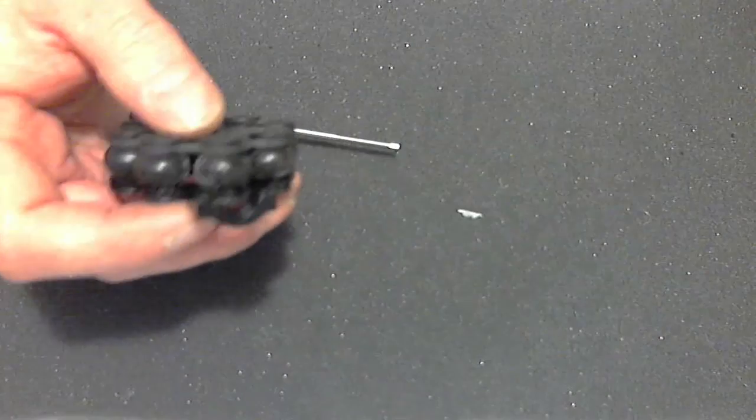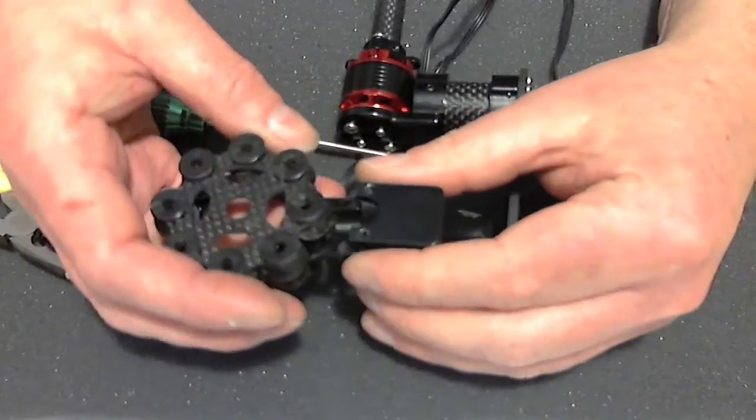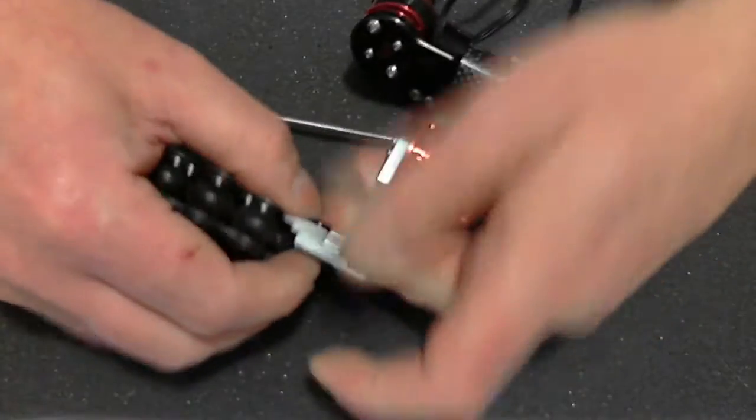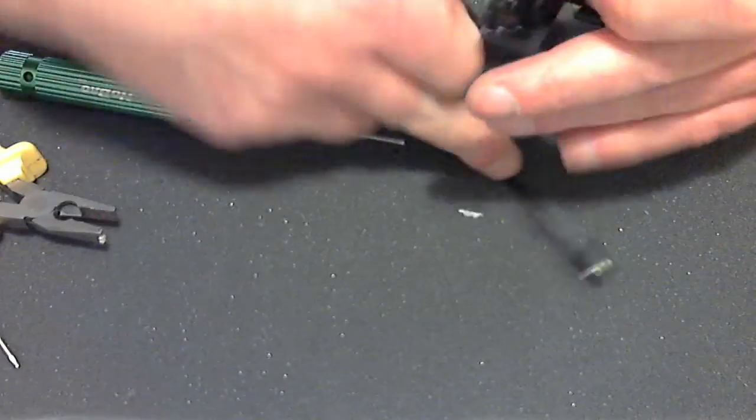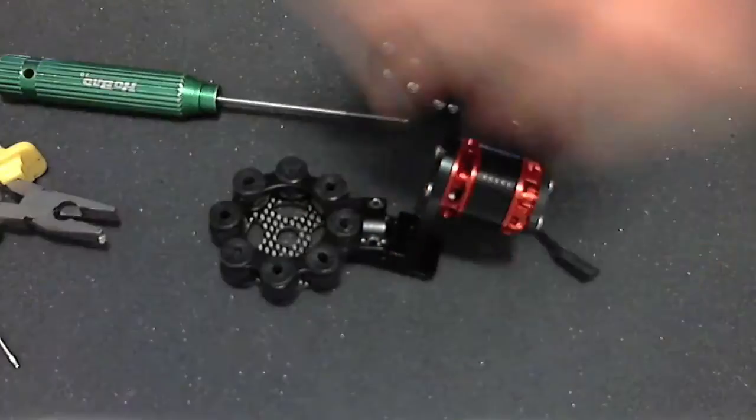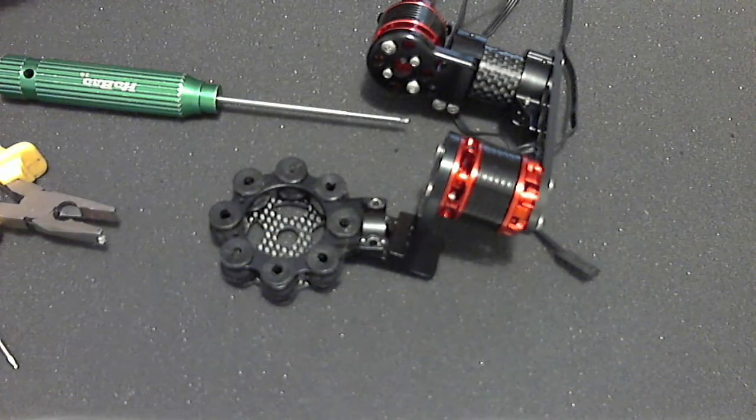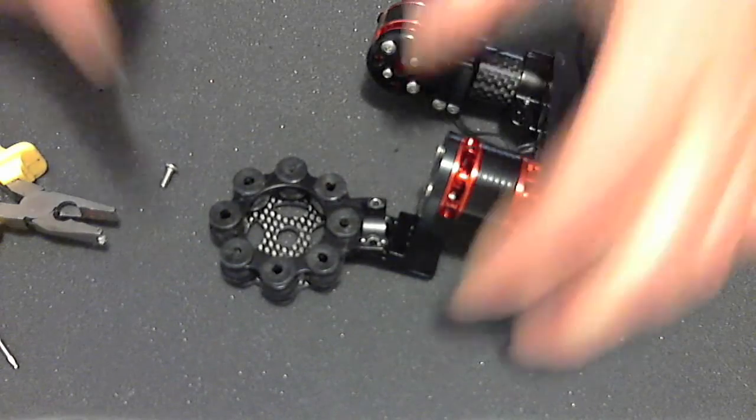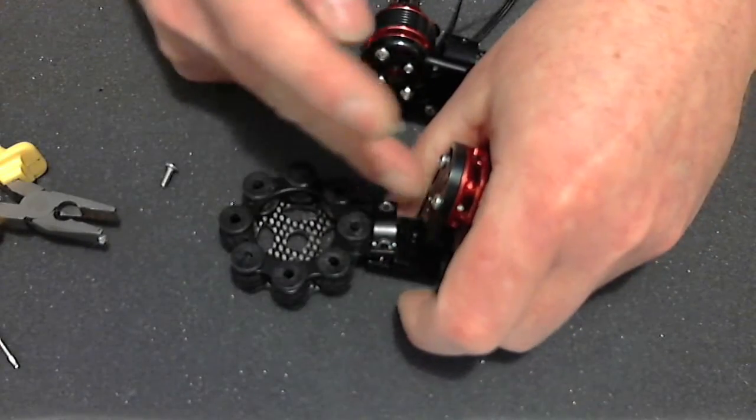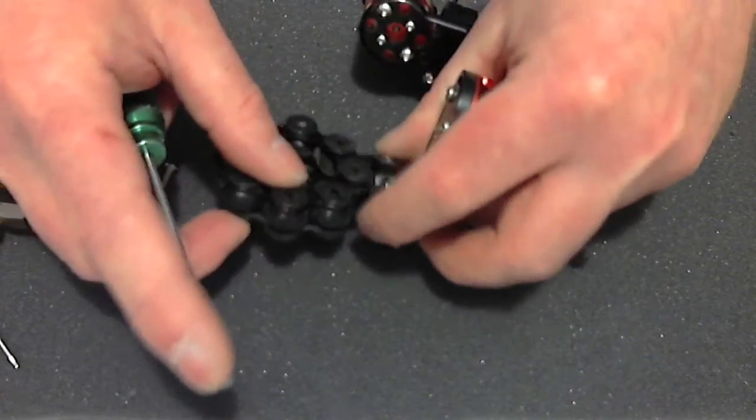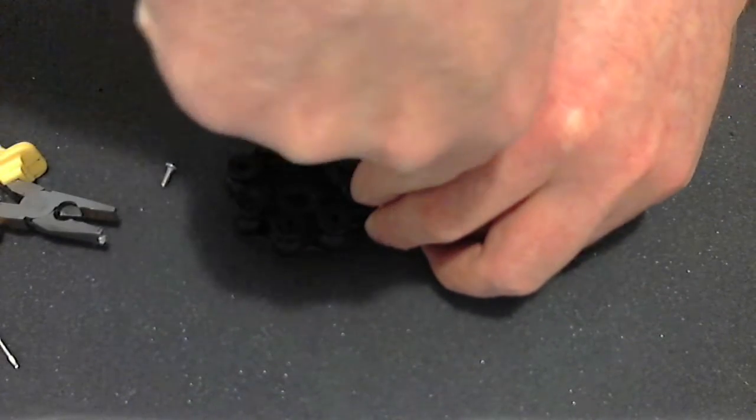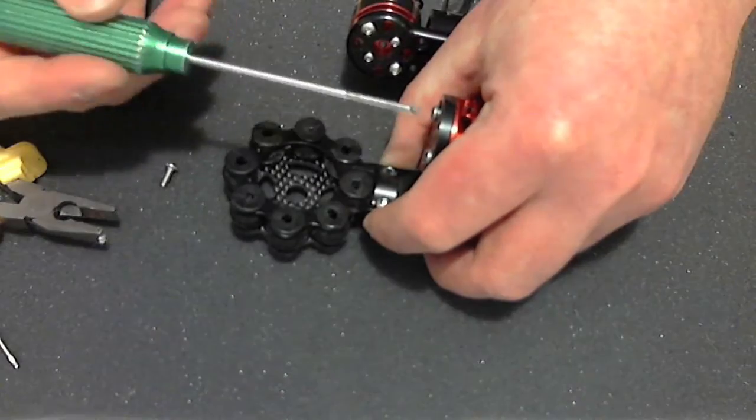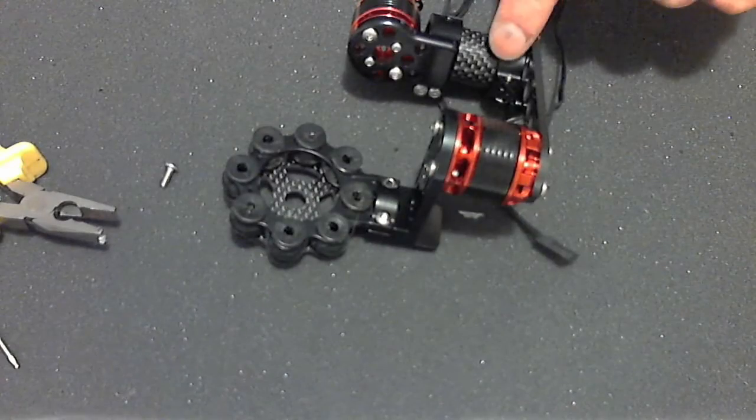Then we grab the rest of our gimbal and this screws to the bottom of that plate. Now, again, at this stage I'm not going to loctite these screws. Use two of the mid-size screws, the M3s. I'm not going to loctite these because if you need to adjust these motor bolts you've got to take this off.